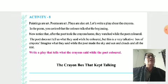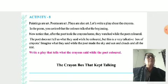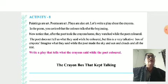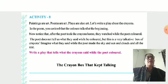Let's write a play about the crayons. You are all aware about crayons — Crayon Colors. In the poem, you notice that the colors talked at the beginning. Now, notice that after the poet took the crayons home, they watch while the poet colored. The poet does not tell us what they said while they colored, but this is a very talkative box of crayons. The crayons talk with each other in their crayon box. Here, write a play — the tale of what the crayons said while the poet colored.